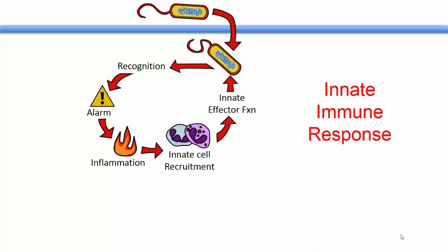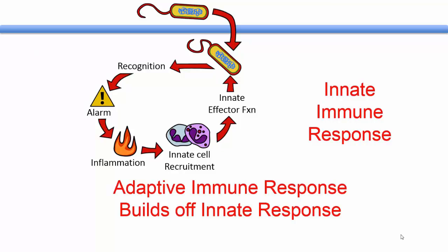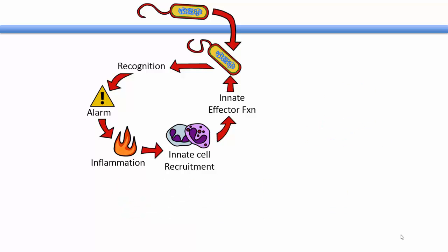We have just covered innate immune responses. Adaptive immune responses build off of innate responses. For most immune responses, dendritic cells serve as the bridge between innate immunity and adaptive immunity.